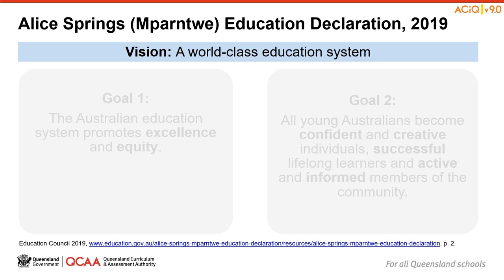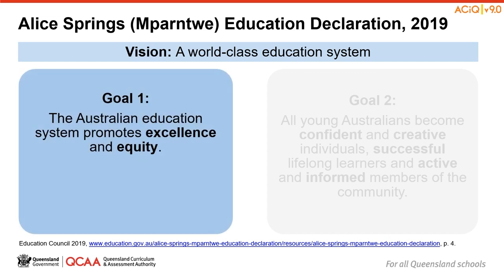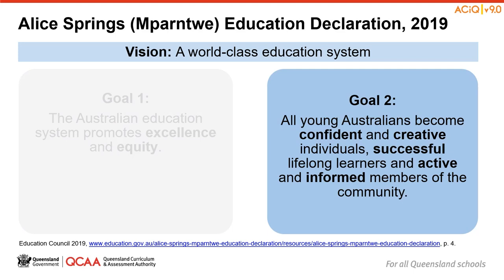The vision is for a world-class education system that encourages and supports every student to be the very best they can be, no matter where they live or what kind of learning challenges they may face. The declaration sets out two distinct but interrelated goals. The first is that the Australian education system promotes excellence and equity. As we plan for Australian Curriculum Version 9, we want to consider how our plans can enhance equity for all stakeholders and promote the highest quality teaching, learning and assessment experiences for our students.